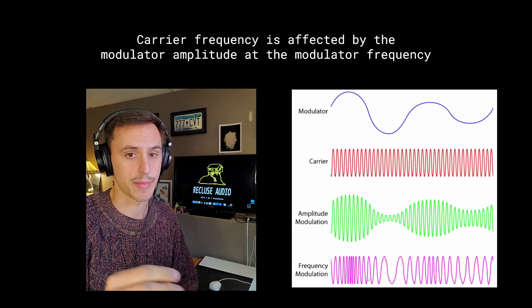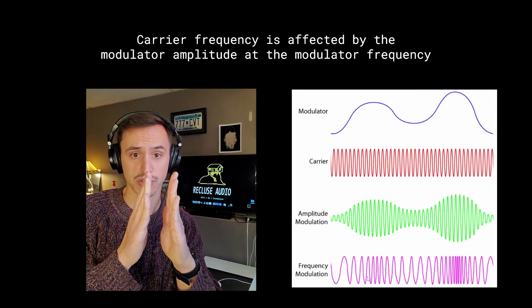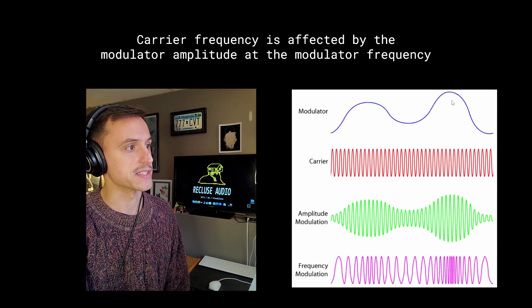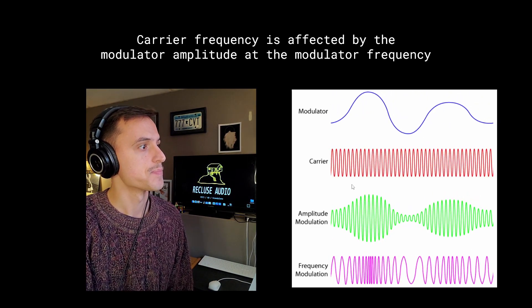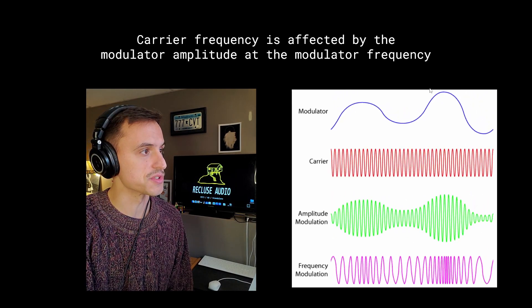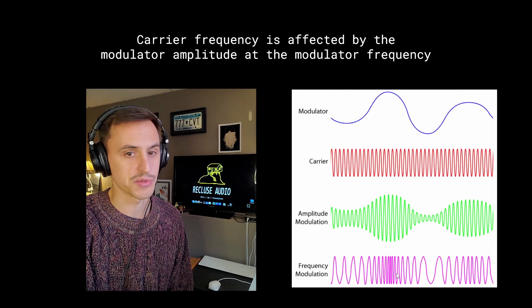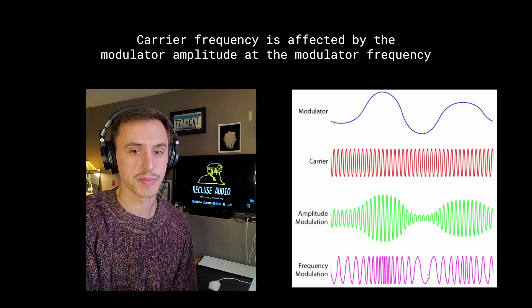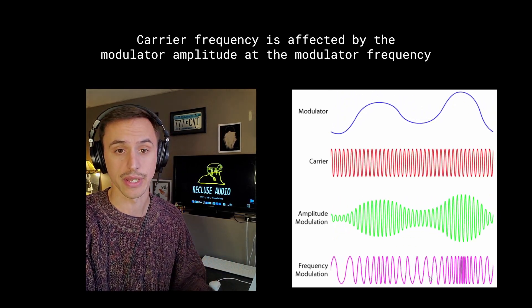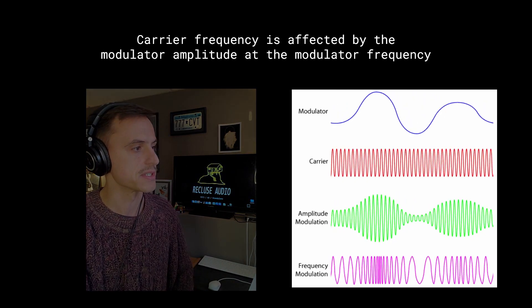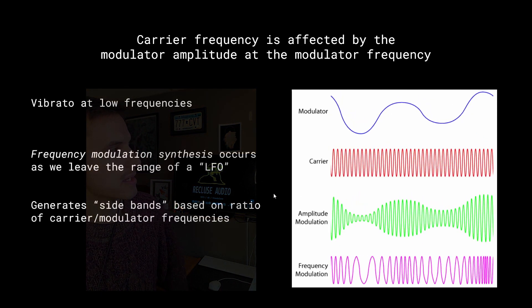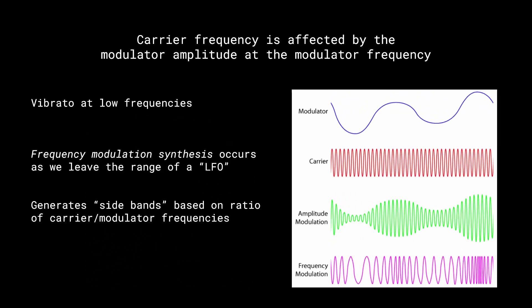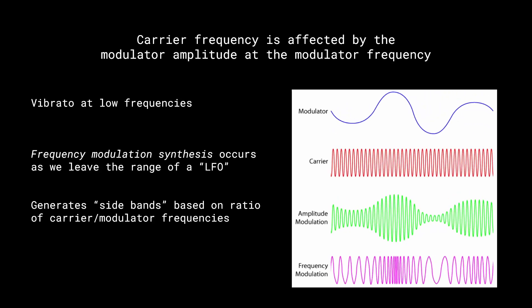That also happens with frequency. If a wave shape gets more squished, the cycles get shorter — that means it's a higher frequency. As we get a high modulating amplitude affecting the carrier, we can see they get more squished together in the wave shape. When it goes low, they become more spaced out, which is a lower frequency. This would sound like vibrato at low frequencies. FM synthesis occurs as we leave the LFO range, because we are now perceiving it as a frequency — it's in the audio rate range.